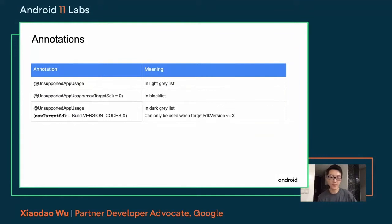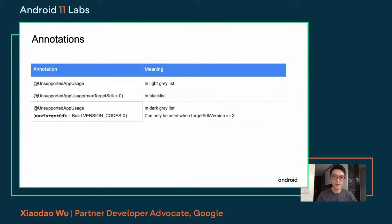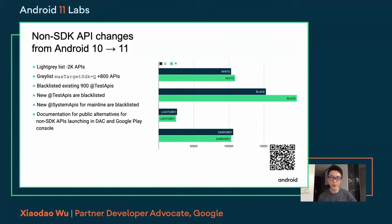If you don't see the maxTargetSdk parameter on an API, that means this API is in the light graylist and you are able to use it now. But if you see maxTargetSdk equals zero, that means this API is in the blacklist and developers should not use this API on any version of the Android platform. Sometimes you can see maxTargetSdk equals a specific API level — that means this API is accessible by apps with a target SDK version up to that level, and anything above it cannot access it. In Android 11, they have shifted a bunch of APIs to a more restricted mode. These APIs may still be accessible for apps targeting Android 10 or lower, but for apps targeting Android 11 or higher, access will be restricted.